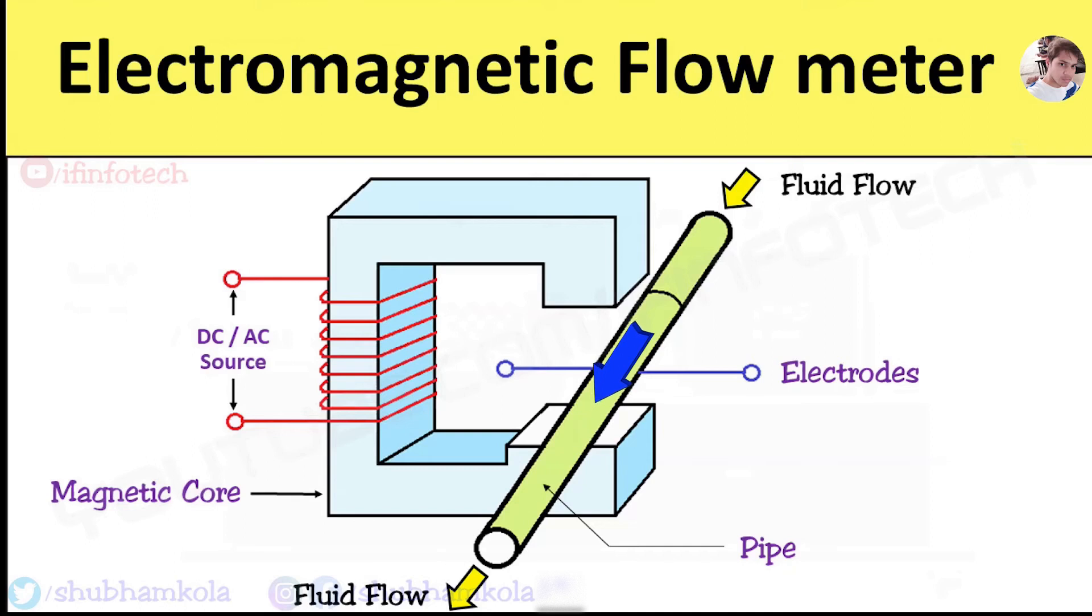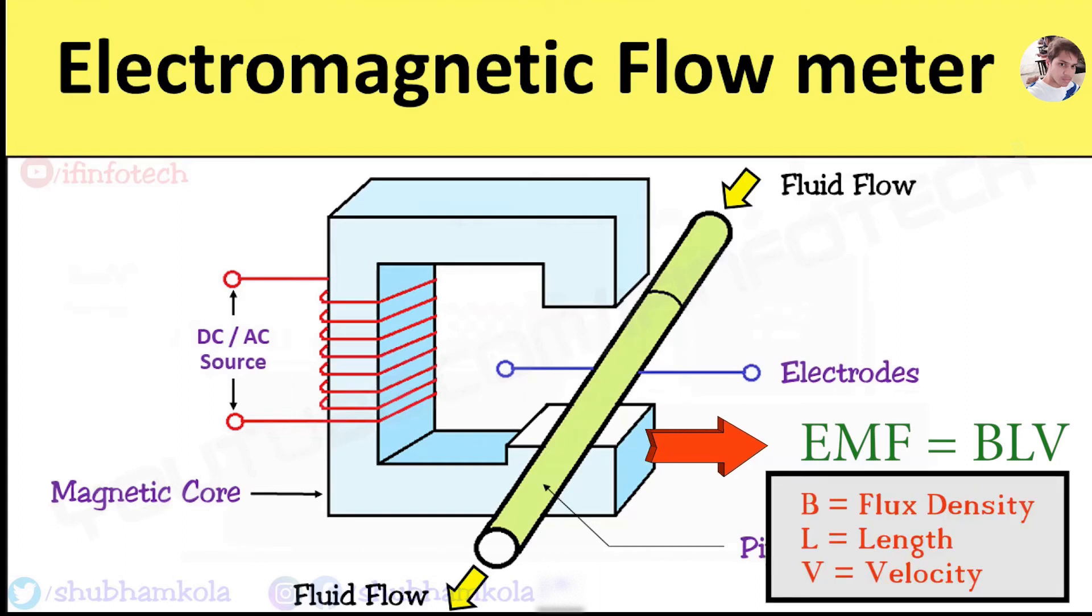The fluid velocity is calculated in terms of the produced EMF in volts. The EMF is the multiplication of flux density, length of conductor, and fluid velocity.